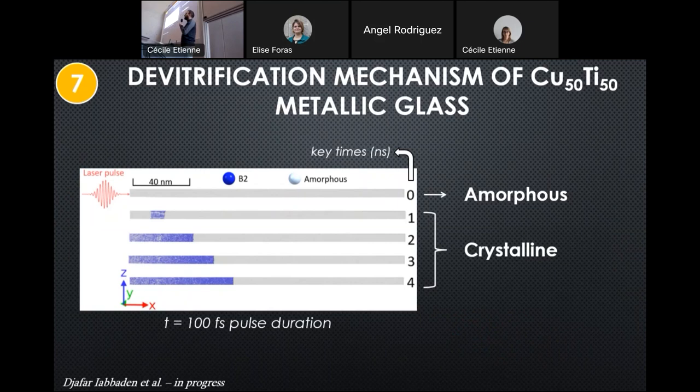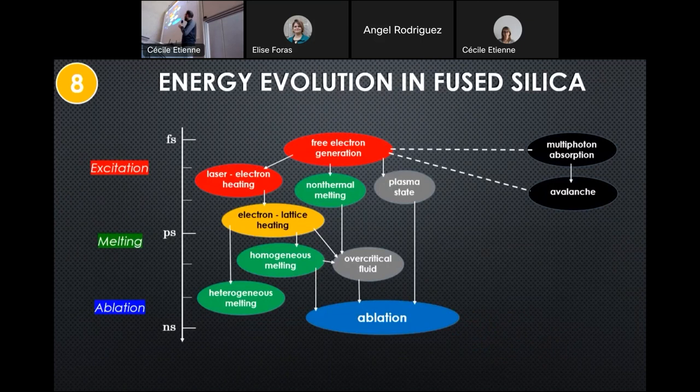This is something that we want to obtain for our material, but the difference is that this is a metallic glass and we are going to work with silica. We need to take into consideration the difference of the materials.